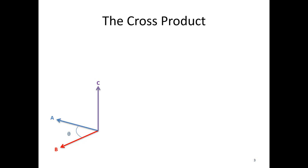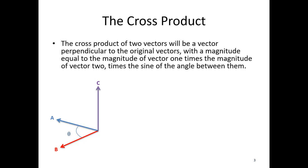Say we've got our two input vectors a and b. The cross product of a cross b is going to be a vector. It's going to be perpendicular to the original vectors. So c is going to be perpendicular to both a and b. And the magnitude is going to be equal to the magnitude of the first vector times the magnitude of the second vector times the sine of the angle between them.